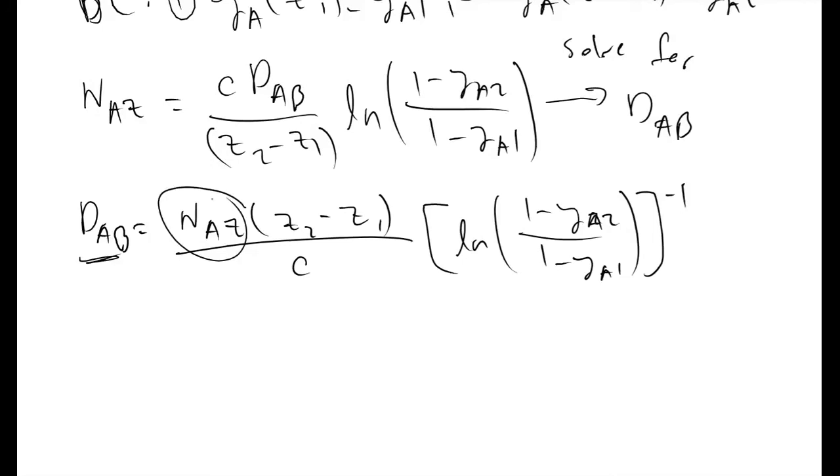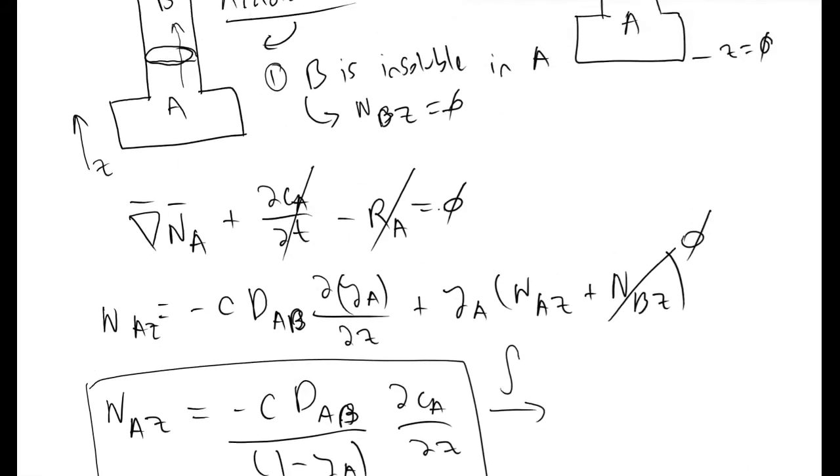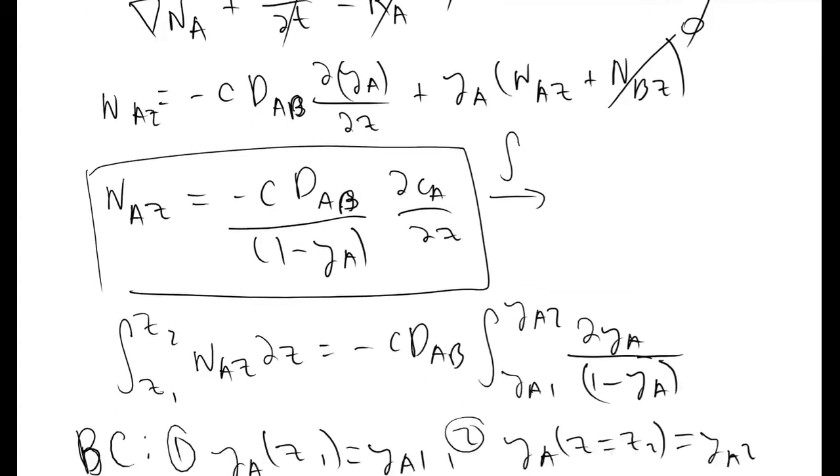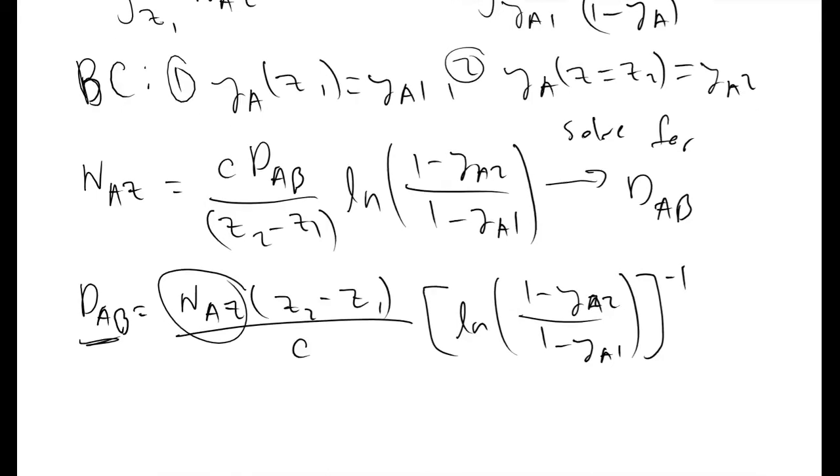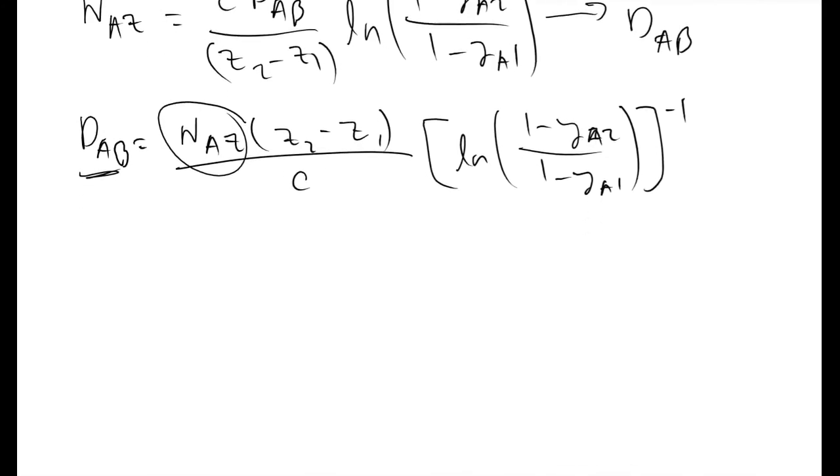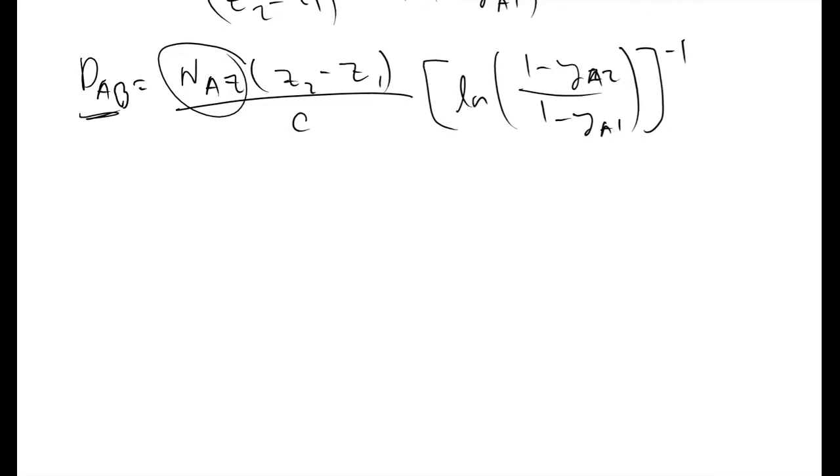The next question is how do we figure out what the NAZ term is? Because we can measure Z2 and Z1 and C pretty easily, as well as we would have a good idea of what YA1 is, the interface molar ratio of A in your Arnold cell based on Henry's law or some other vapor liquid equilibrium relationship. The next challenge here in actually finding what your diffusion coefficient is, is figuring out what NAZ is.